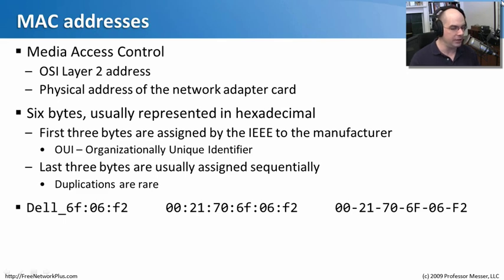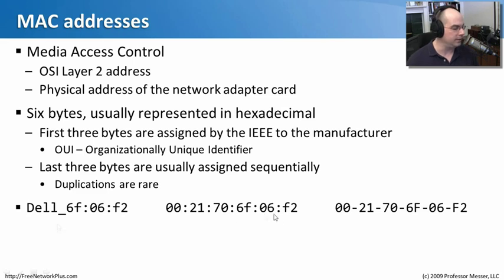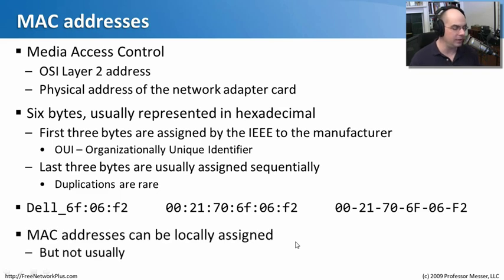Here are some representations of exactly the same MAC address — you see them written different ways depending on the environment. There's 'DEL 6F06F2,' then '0021706F06F2,' and '0021706F06F2' separated with dashes rather than colons. The '002170' is the organizationally unique identifier for Dell. Sometimes an application abbreviates it and shows 'DEL' with the address '6F06F2.' You can locally assign MAC addresses, but you usually don't want to unless there's a very good reason.